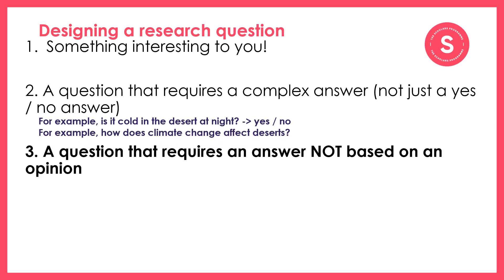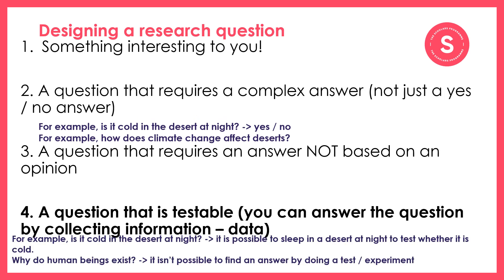Number three: you want a question that requires an answer not based on an opinion — we'll be coming back to this one to discuss it more and look at lots of examples. Number four: you want a question that is testable, in other words a question that you can answer by collecting information — we call that information data. For example, 'Is it cold in the desert at night?' is testable because it's possible to go there at night to test whether it's cold. But 'Why do human beings exist?' is not testable because it isn't possible to find an answer by doing a test or experiment. Number five: you want a question that is specific — a question that focuses on a narrow topic.